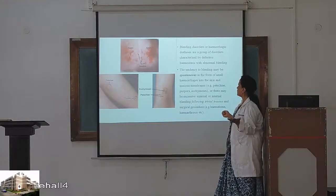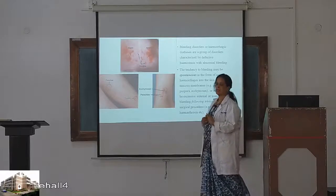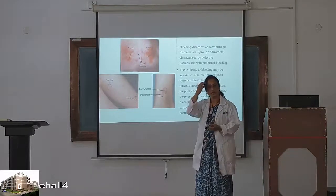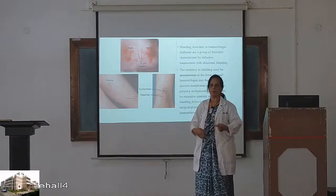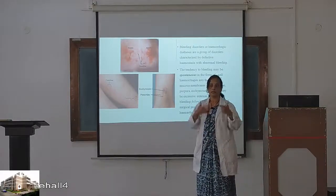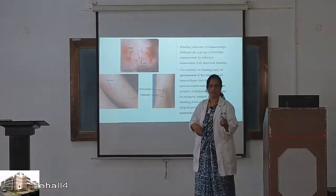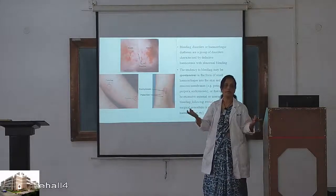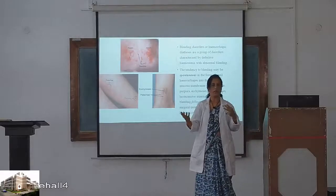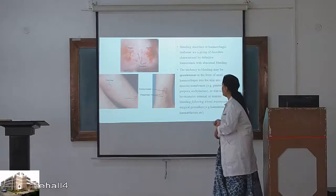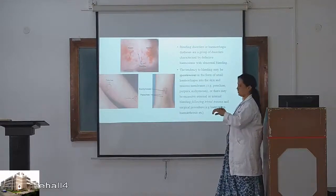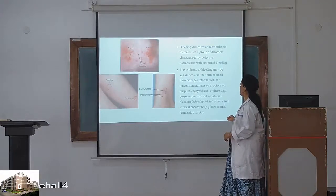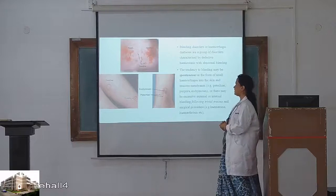Bleeding disorders are characterized by defective hemostasis with abnormal bleeding. This bleeding could be spontaneous — you must have seen many hypertensive patients who develop intracranial hemorrhage in the brain. That is spontaneous bleeding. It could be in the form of small hemorrhages into the skin or mucous membrane, or there may be excessive internal bleeding following trivial trauma or surgical procedures.